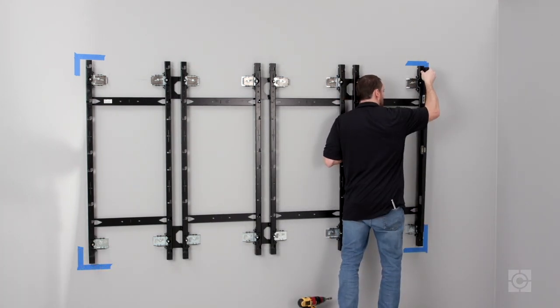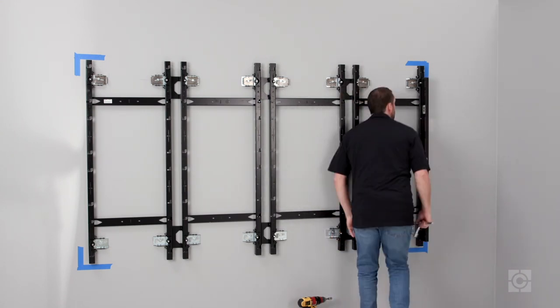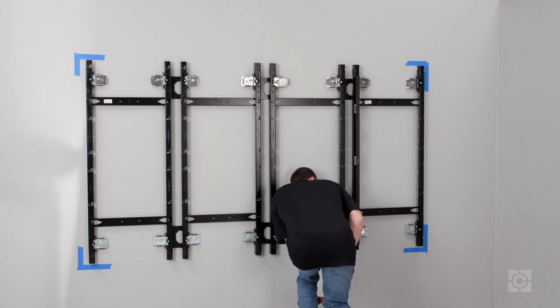Now, we will place a level on the face of each of the mount uprights. We will use the depth adjust knobs to level the mounts vertically, working our way back to the first mount.